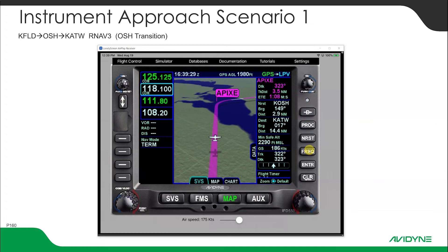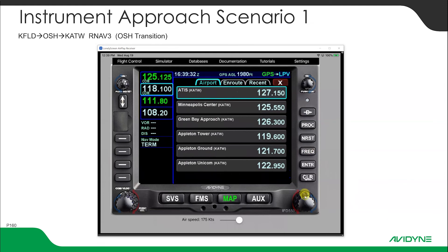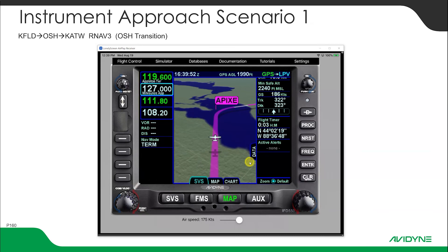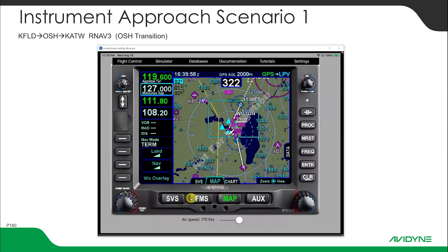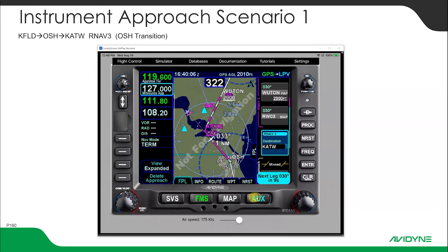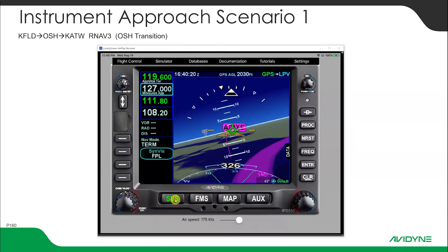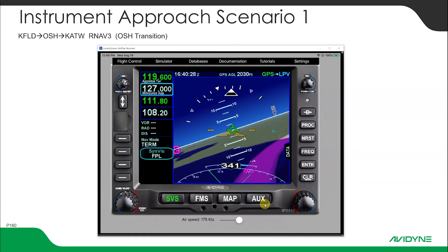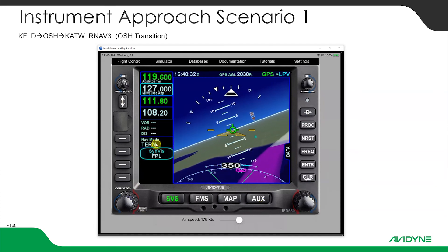To load frequencies I can hit the frequency button, double-click on the frequency, go to Appleton Tower or Milwaukee Approach — whatever we want — and flip-flop that into the active. We're waiting to get to Apixi. Back on the FMS here in plan view, I'll pinch zoom — next leg in nine seconds. When we turn inbound at Apixi we're going to switch from GPS to LPV. I'll go to the first-person SVS page — watch when we turn inbound, our lateral and vertical deviation indicators will appear.